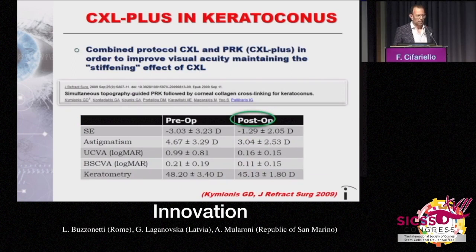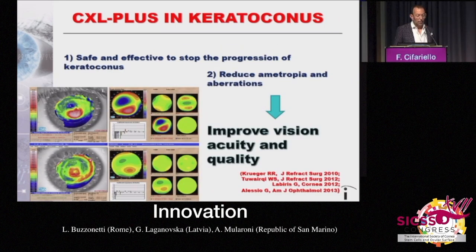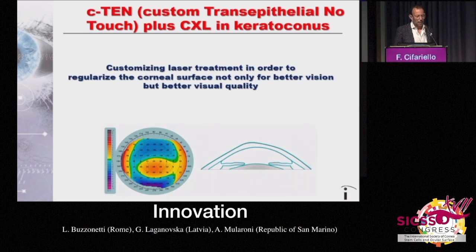We know that the combined protocol between CXL and PRK allows us to improve visual acuity, and most importantly, good cornea structure in terms of stability. This is a safe and effective procedure to stop the progression of the disease, and it allows us to reduce ametropia and aberrations and thus improve visual acuity and stability.